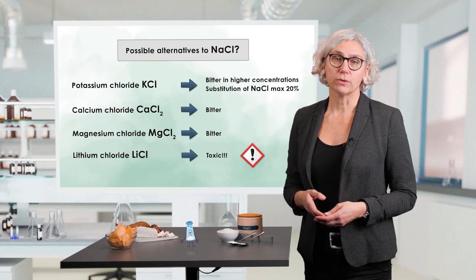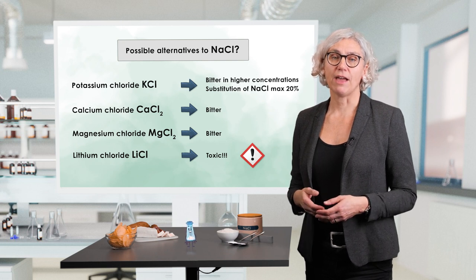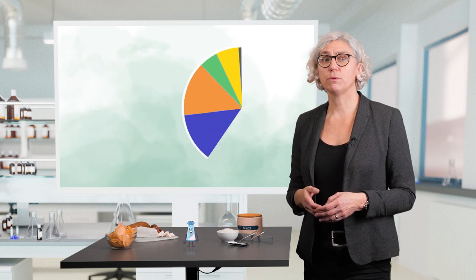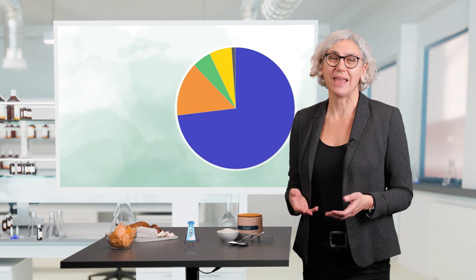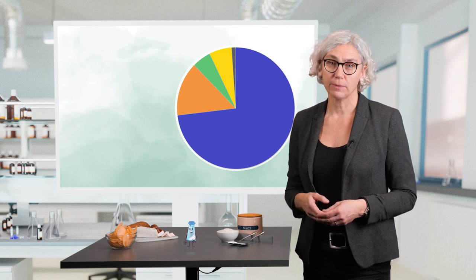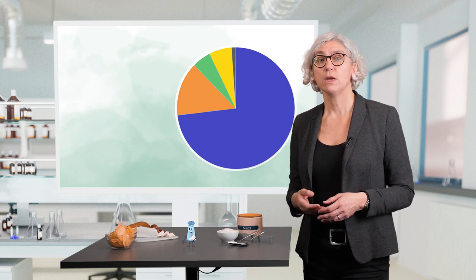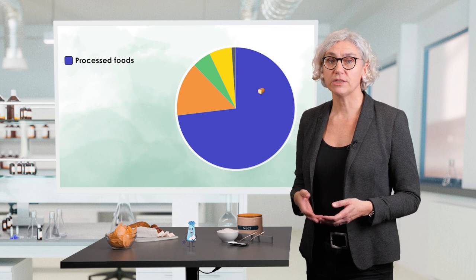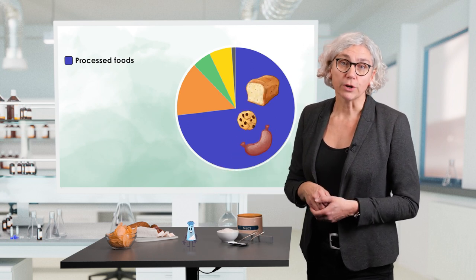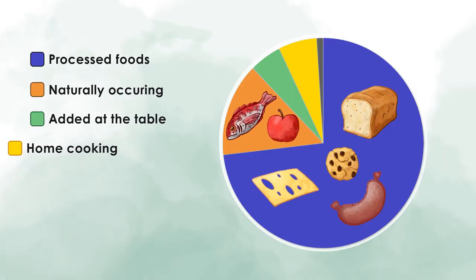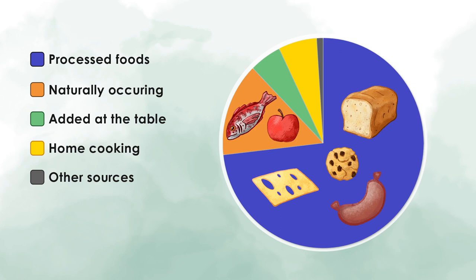Instead of talking about salt substitutes, let's look at where we get our average daily 10 grams of sodium chloride from. You might think we consume the largest proportion from table salt we add at the table, but this is not correct. 70 to 80% of the salt we consume comes from processed foods. Main sources are bread and bakery goods, meat products and sausages, and cheeses. Many convenience products also contain high amounts of salt, as do breakfast cereals, crisps, chips, and other salted snacks.